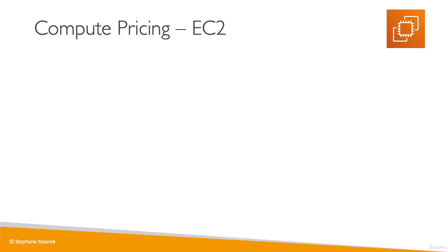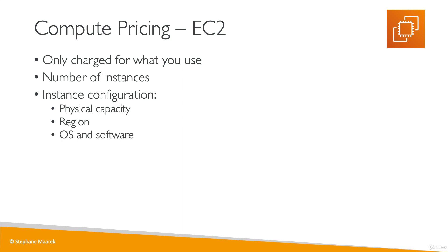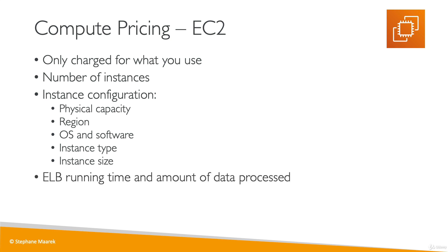Let's do a deep dive into pricing for different services. For EC2 with on-demand, you're only charged for what you use — the number of instances, the instance configuration, capacity, number of CPU and RAM, the region, the operating system, the software installed, the instance type and size, and if using a load balancer, how long it runs and the amount of data it processes.